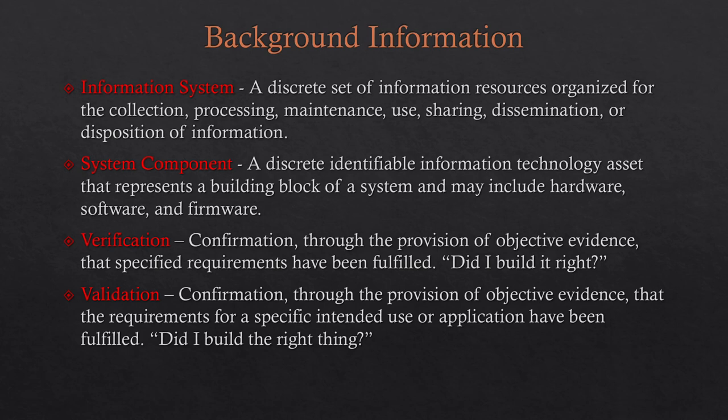Two concepts from systems engineering are verification and validation. Verification asks: did I build it right? You define a performance standard, a design spec, and verify you built it correctly to that spec. Validation is different — it asks: did I build the right thing? If you view NIST SP 800-171 requirements as desired system outcomes, you could build something correctly to your standard but still not achieve the desired outcome, meaning you fail validation and need to redesign.